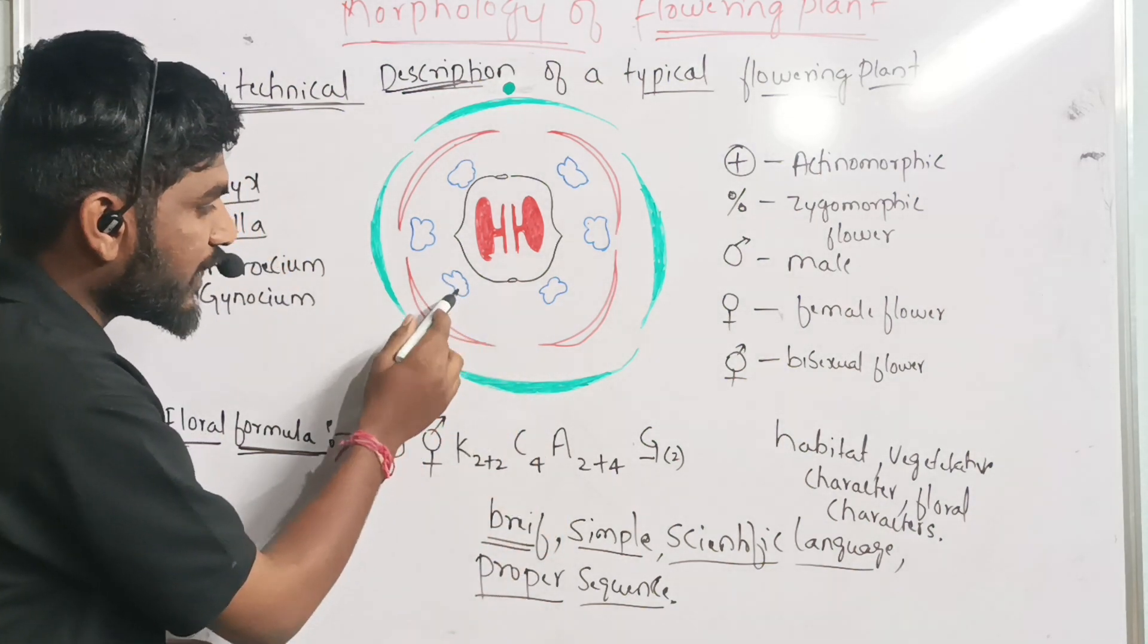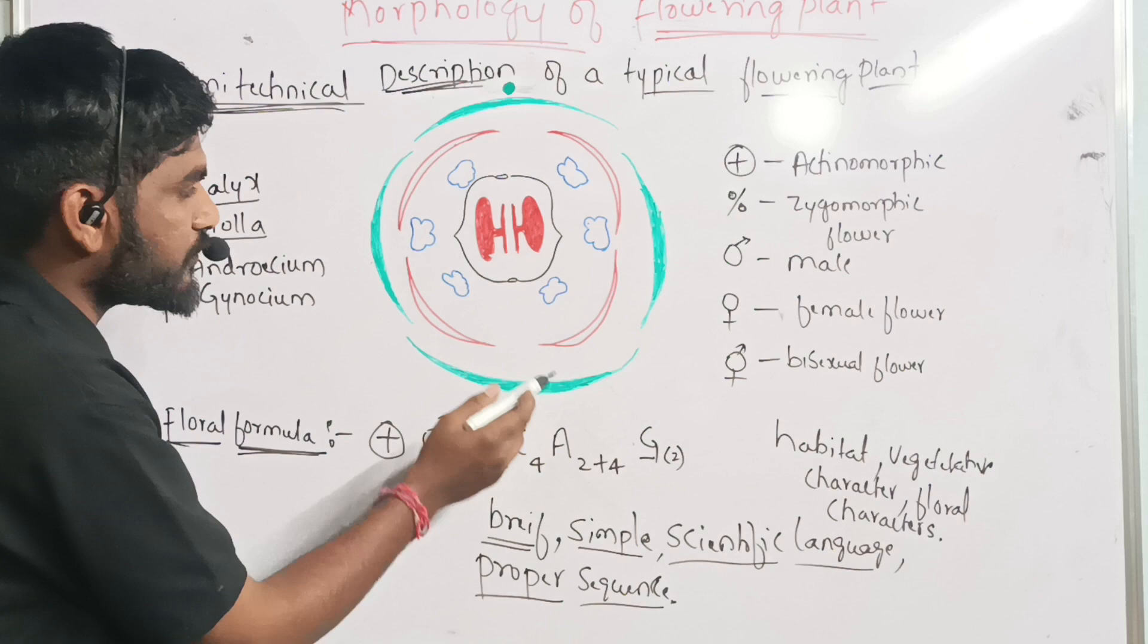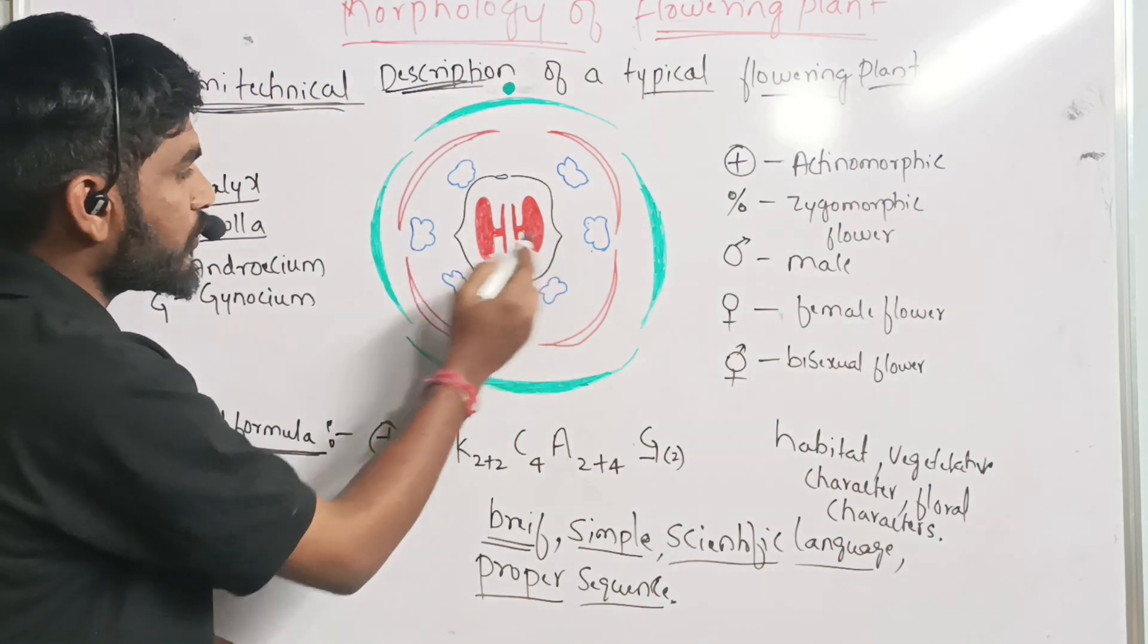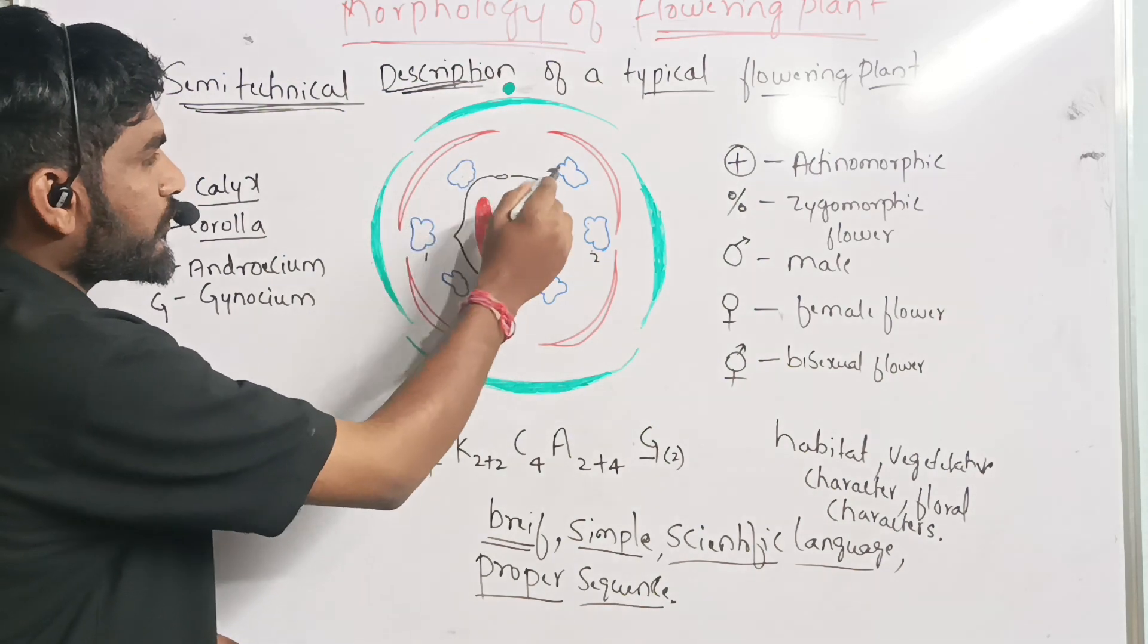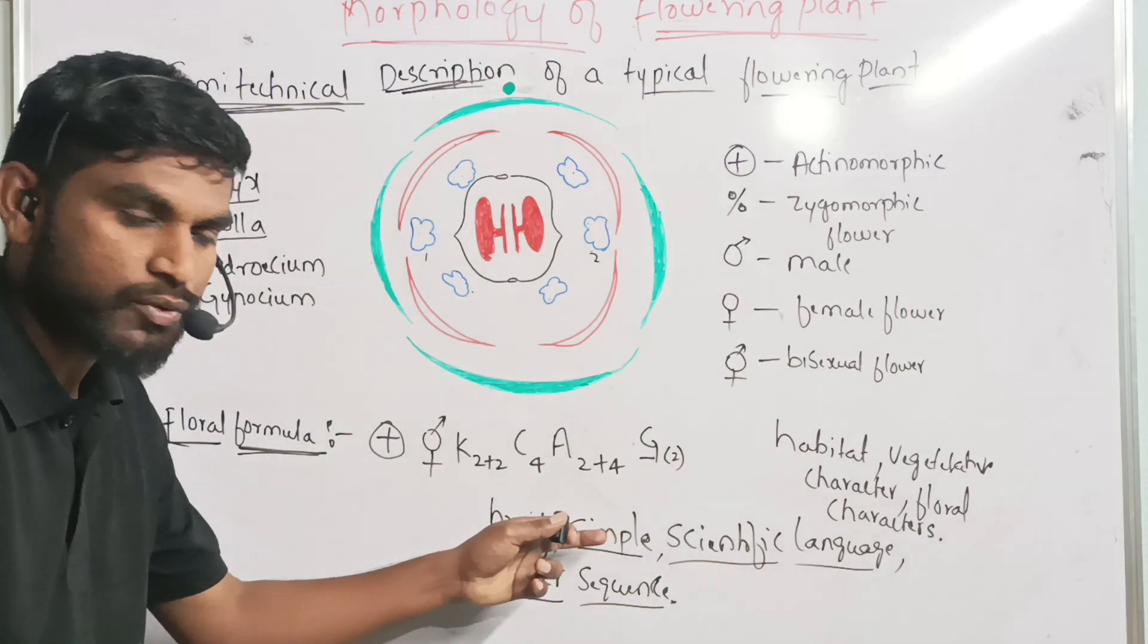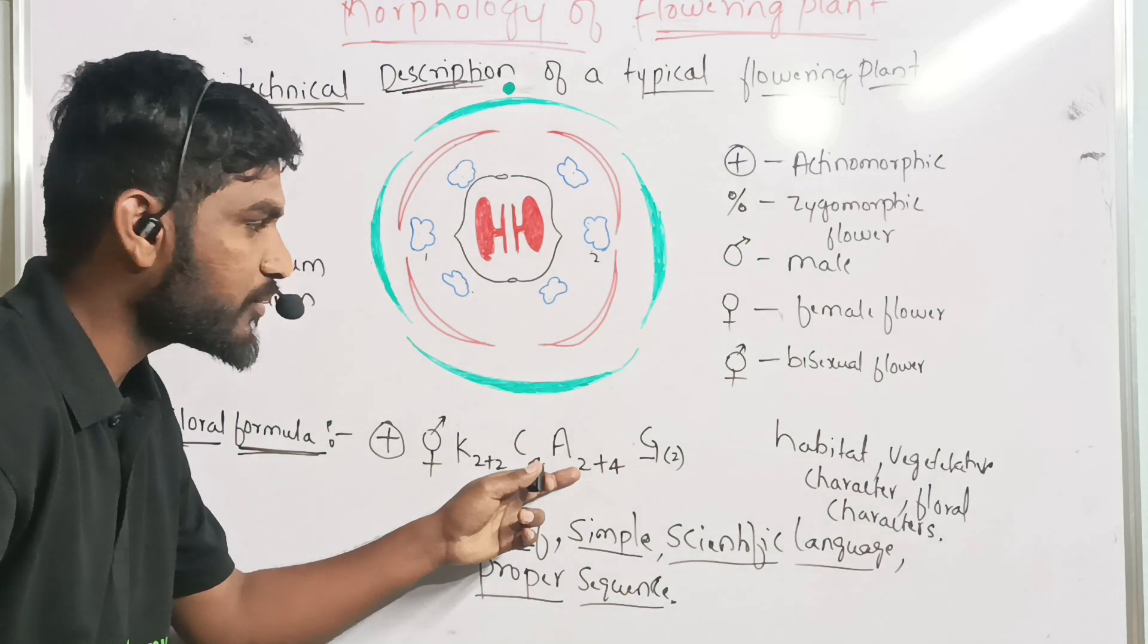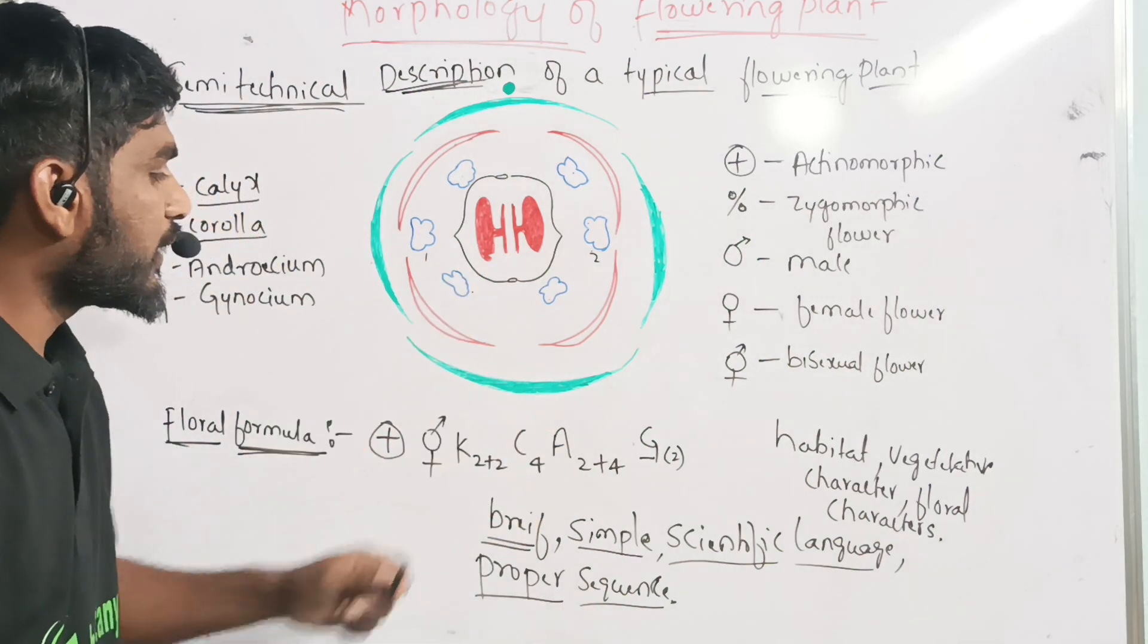Androecium, nothing but male gametes. Two plus four arrangement will be present. These are the two - one, two, and four - one, two, three, four. Two plus four arrangement of androecium will be present in the floral diagrams.